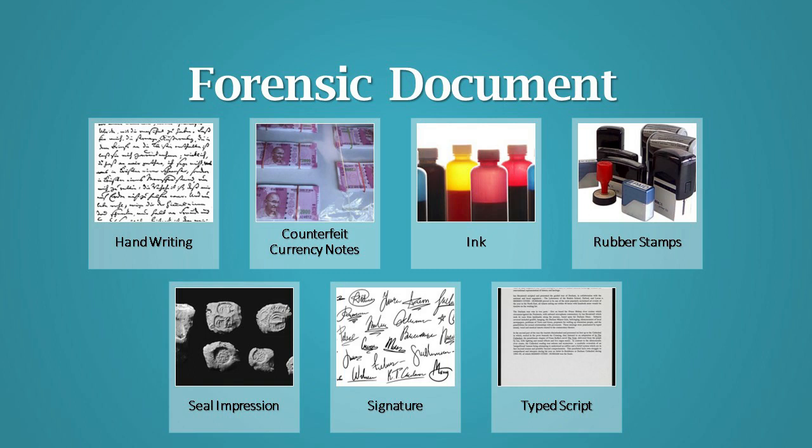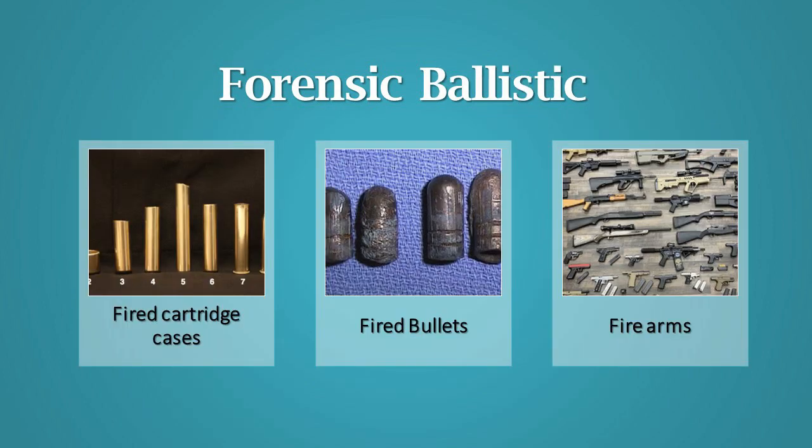Forensic Document: it includes the examination of handwriting, signature, typescripts, ink, rubber stamp impression, seal impression, counterfeit currency notes, and many more. Forensic Ballistics: this division handles cases of suspected weapons, linking the fired bullet or cartridge with the suspected weapon, range of firing, etc.